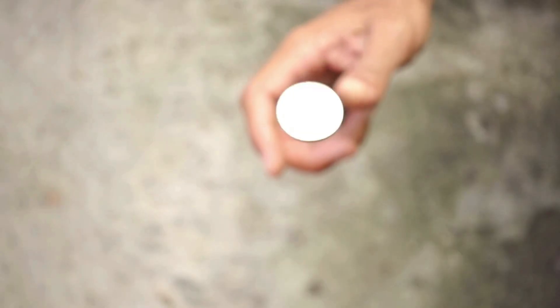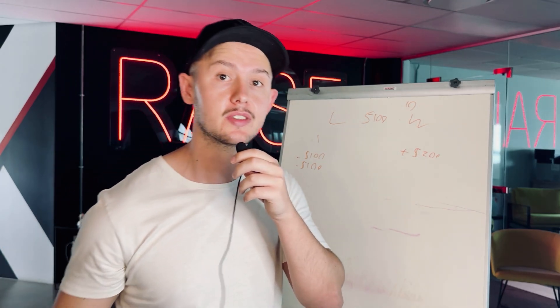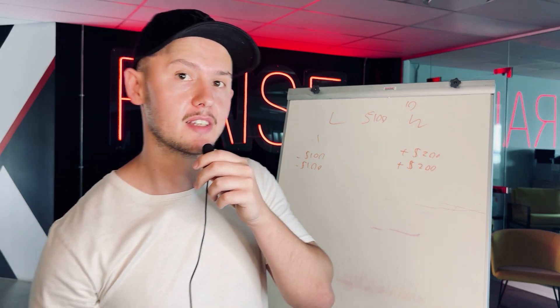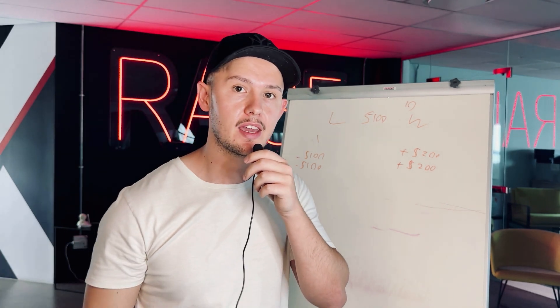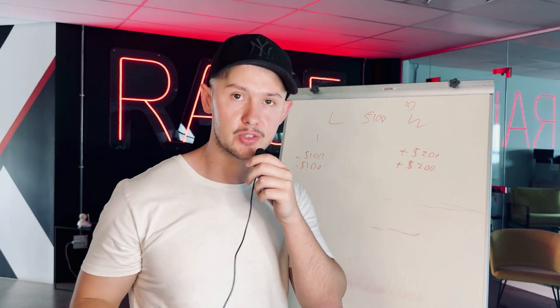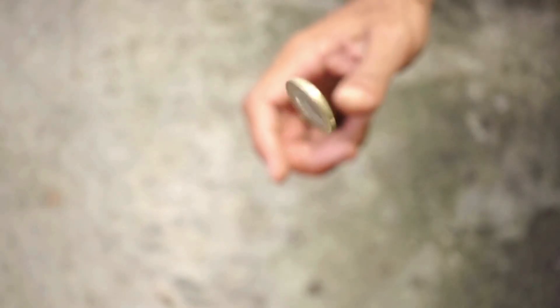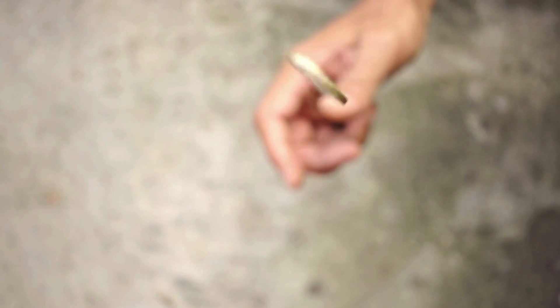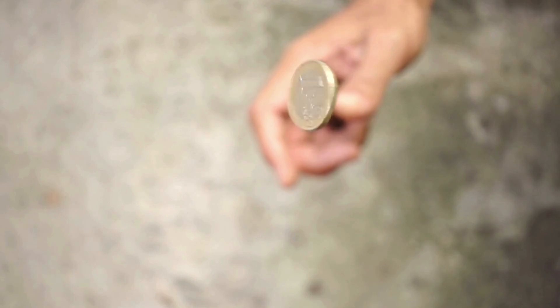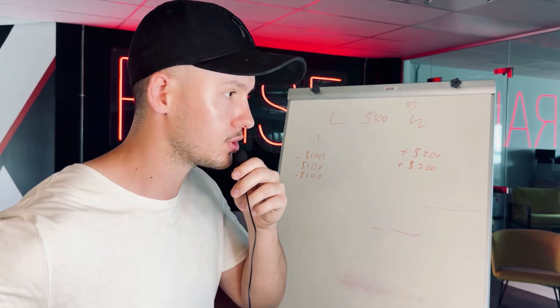Let's do Heads for number four — and it's Heads, so we make another $200. So we're about four trades down with a 50% success rate and already up $200 on this trading account. Number five we bet Tails — it's Heads, so we lose $100. Number six we do Tails — it's Heads, so we lose another $100.